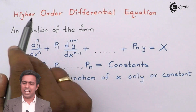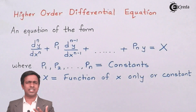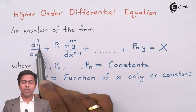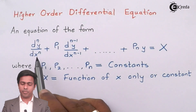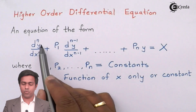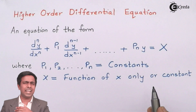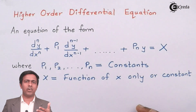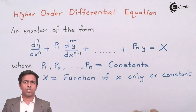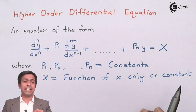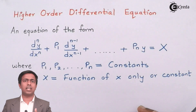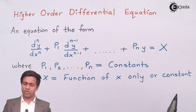Why do we call it a higher order differential equation? In this equation, there is a term like d^n y / dx^n, which means it is the nth derivative of function y with respect to x. Any differential equation having terms like d²y/dx², d³y/dx³, and so on is called a higher order differential equation. When it is d²y/dx², we call it the second order derivative, and that is why this is called a higher order differential equation.